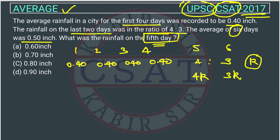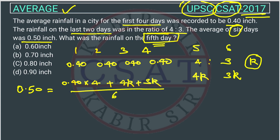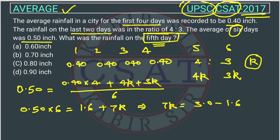Now we will make the equation. The average of 6 days is given as 0.50. So: (0.40 × 4 + 4k + 3k) / 6 = 0.50. Multiplying both sides by 6 gives 0.50 × 6 = 3.0, and the left side becomes 1.6 + 7k. So 7k equals 3.0 minus 1.6.